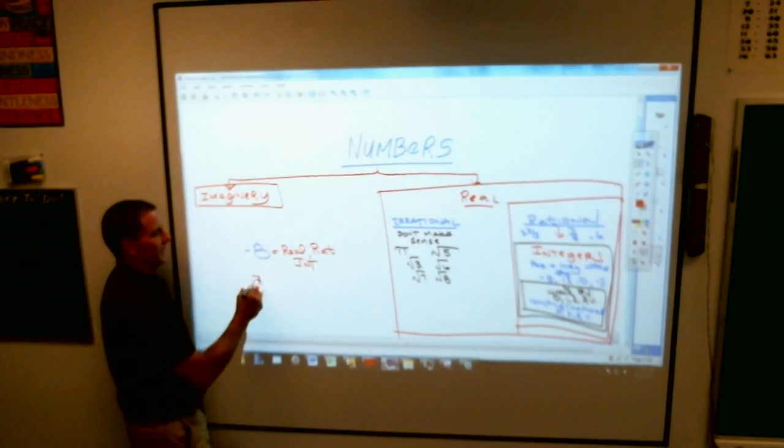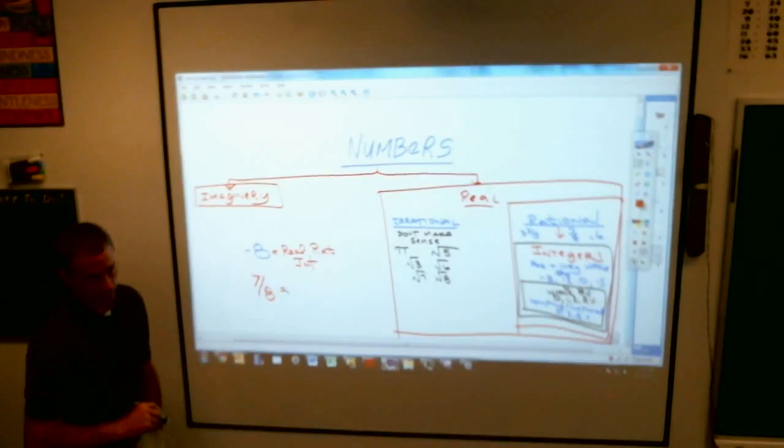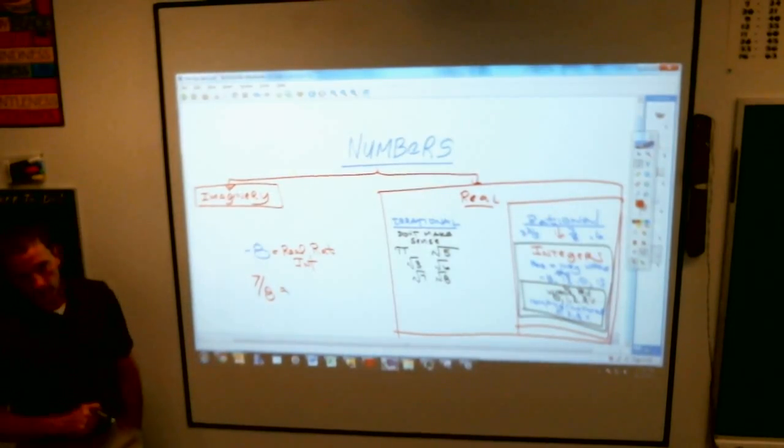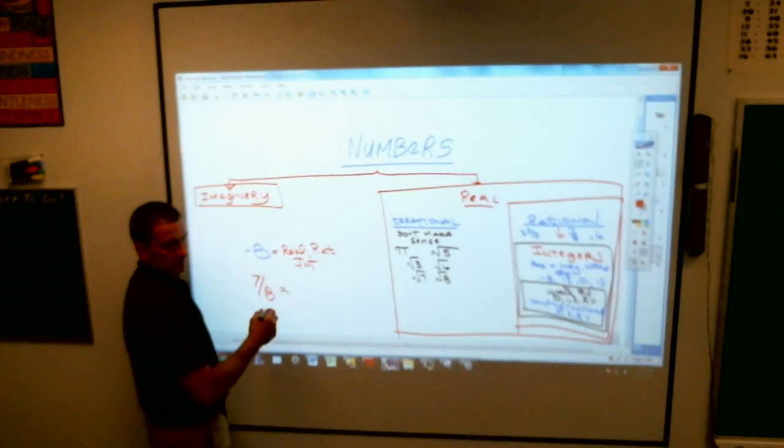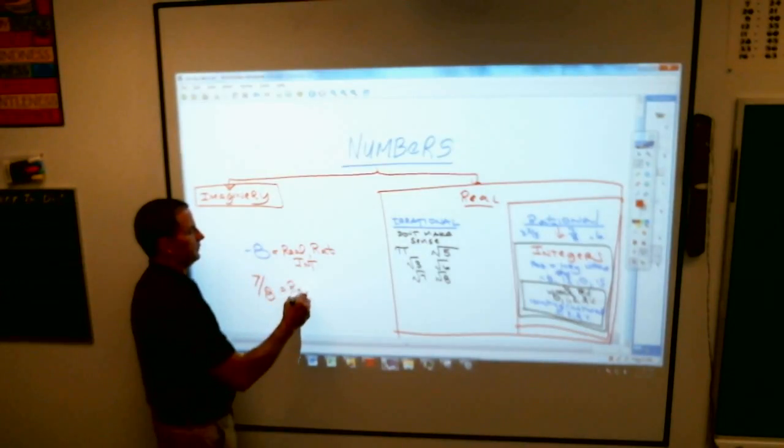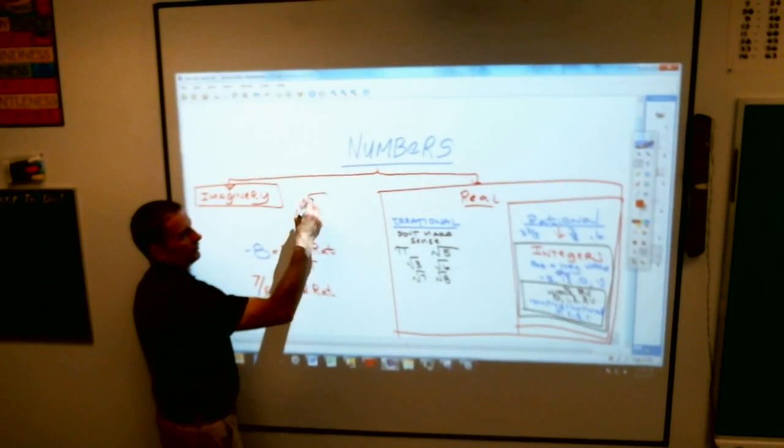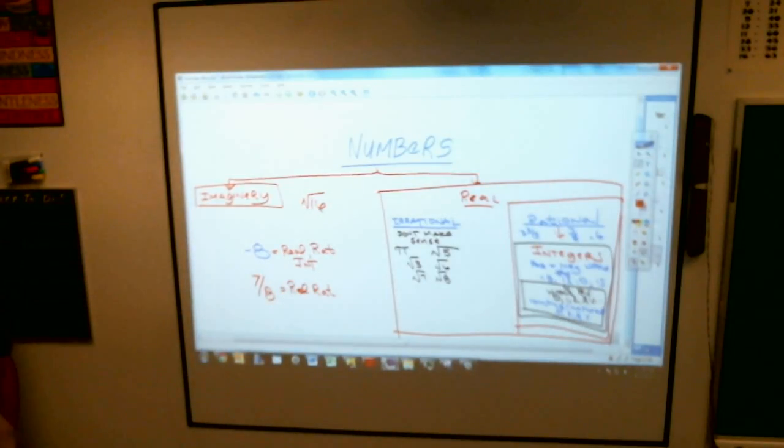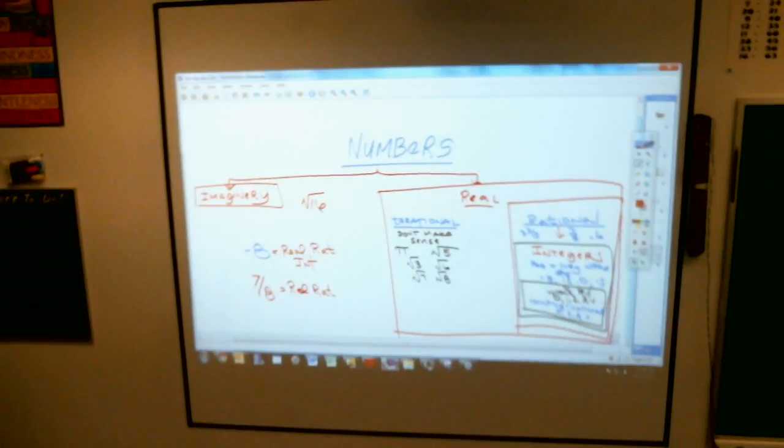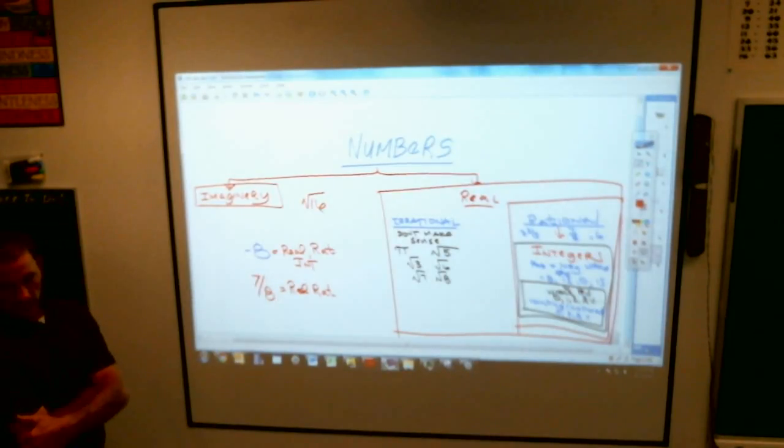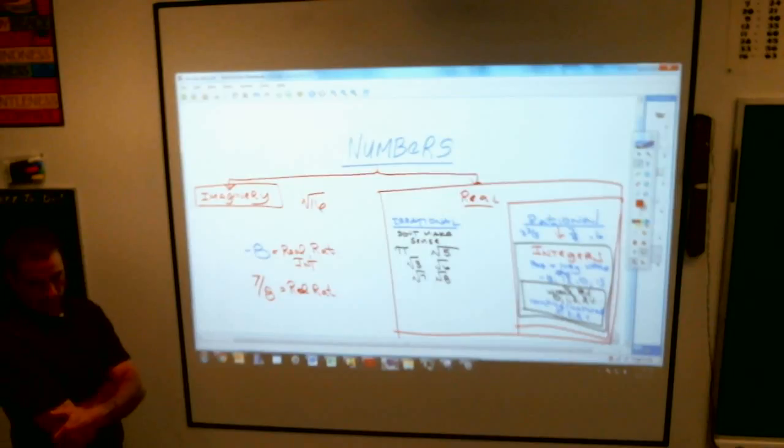If I gave you seven eighths, seven eighths belongs to what groups? Belongs to two of them. Which ones has the fraction in it? Avram? Rational. Real and rational. Yeah, real and rational. If I said the square root of 16, the square root of 16 belongs to what groups of numbers? Oh, now everybody's all confused. By the way, I am trying to trick you a little bit here, so be careful. Which ones? The square root of 16 belongs to what groups of numbers?